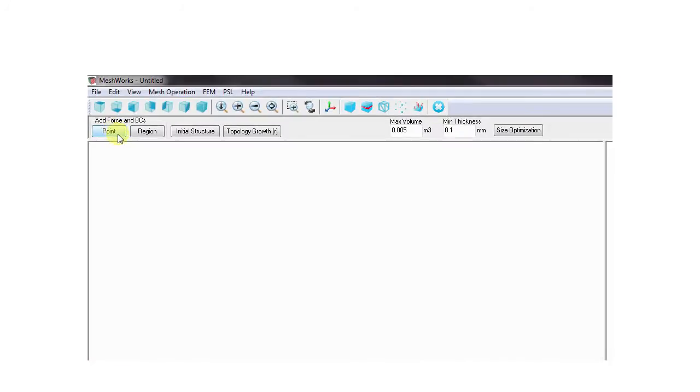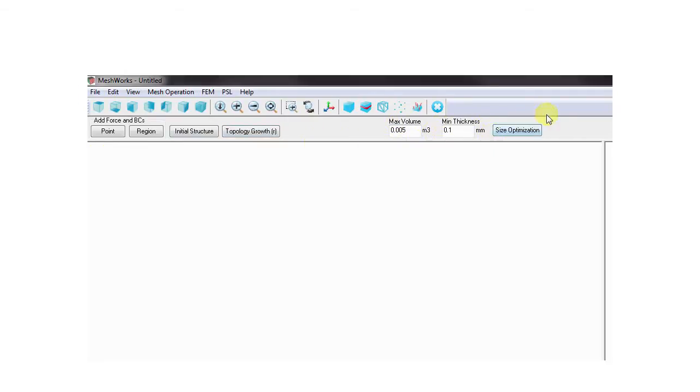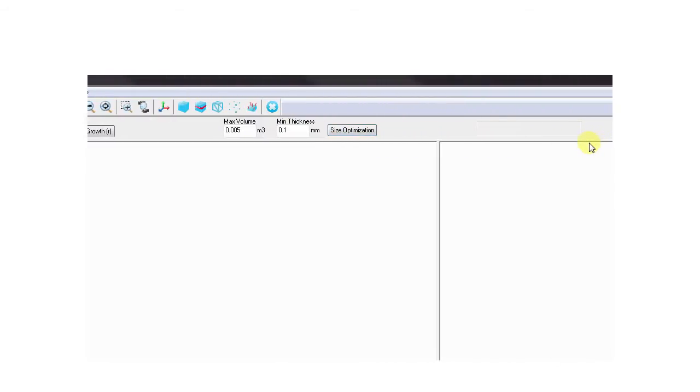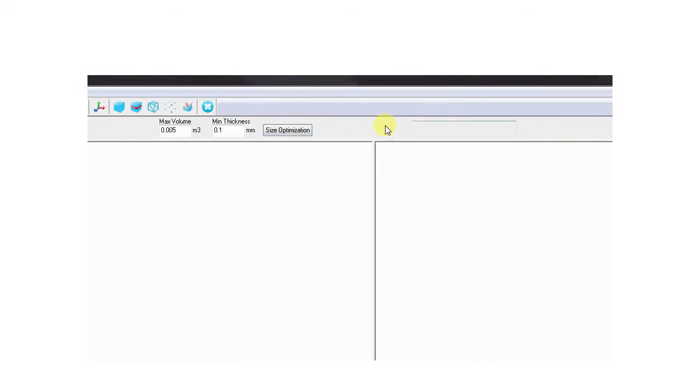This is our Develop Design Platform prototype. It supports adding point forces and supports, creating the initial structure, and topology growth. These are the material properties for size optimization, and this text box will show the strain energy of the structure in each iteration.